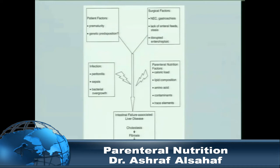TPN-associated liver disease is multifactorial — not only one single factor. It involves patient factors including prematurity, possible genetic predisposition, surgical factors such as NEC or congenital abnormality, and infection. Hospital-acquired infection is the number one problem in the ICU. TPN itself — the way we write and administer TPN — is very important, as it leads to liver damage that can be progressive.